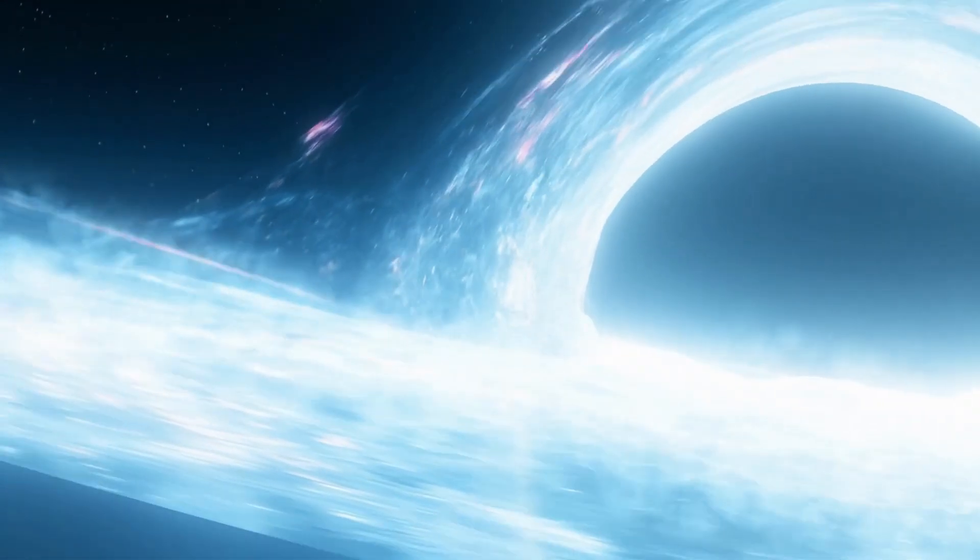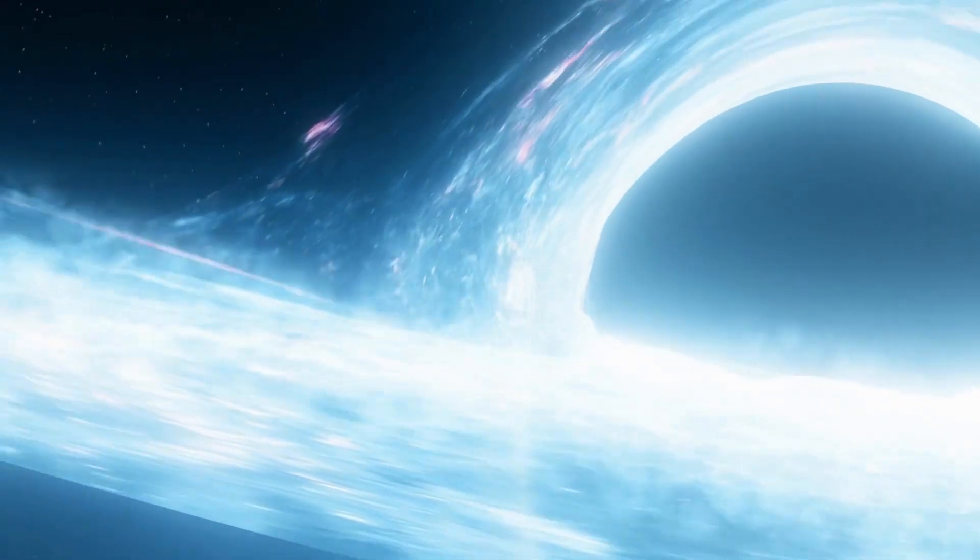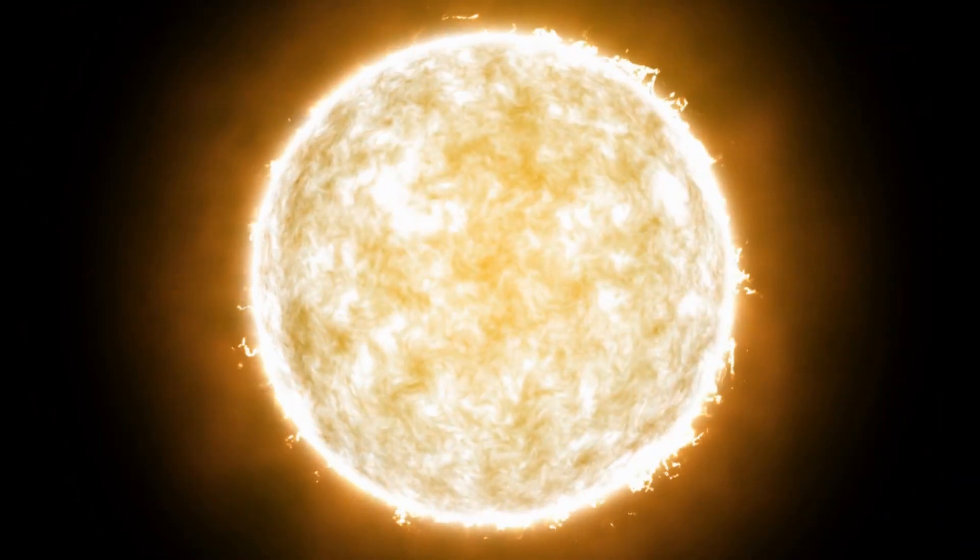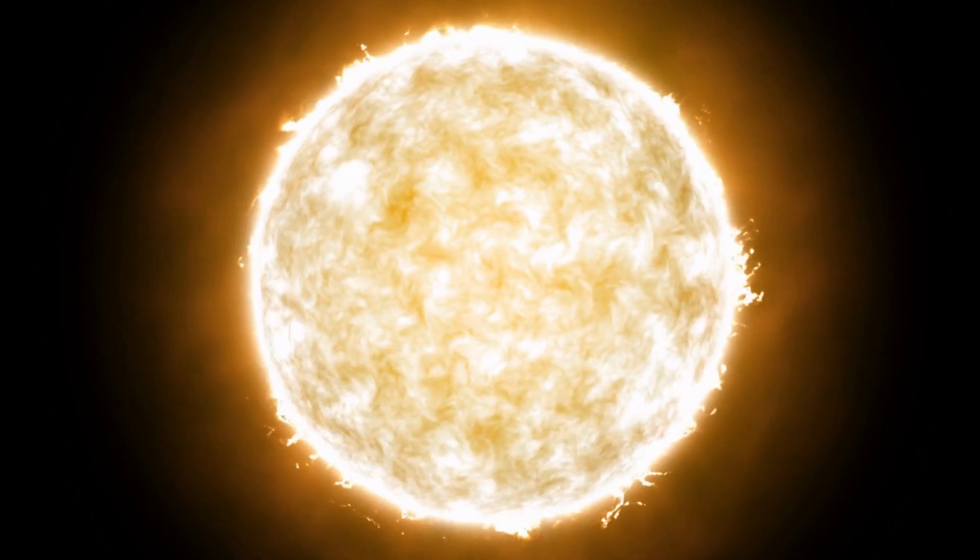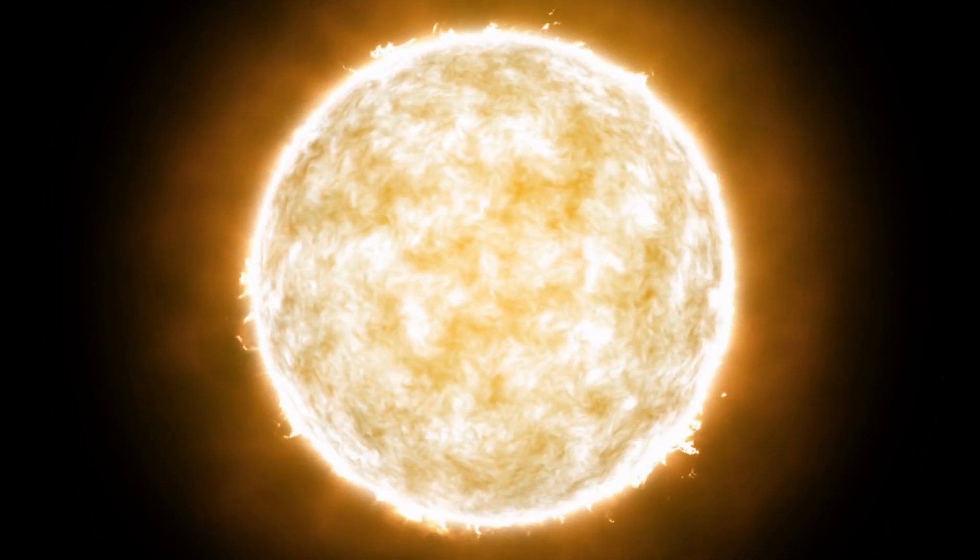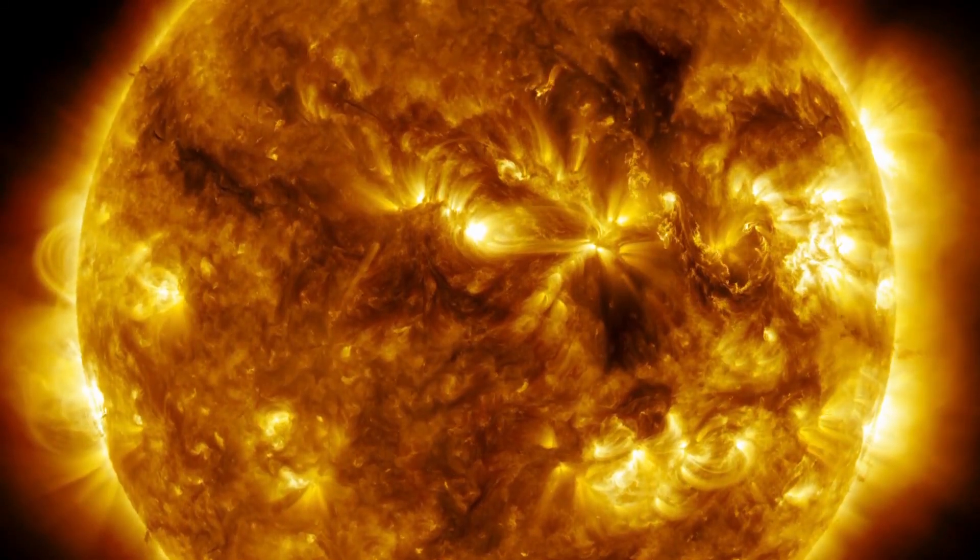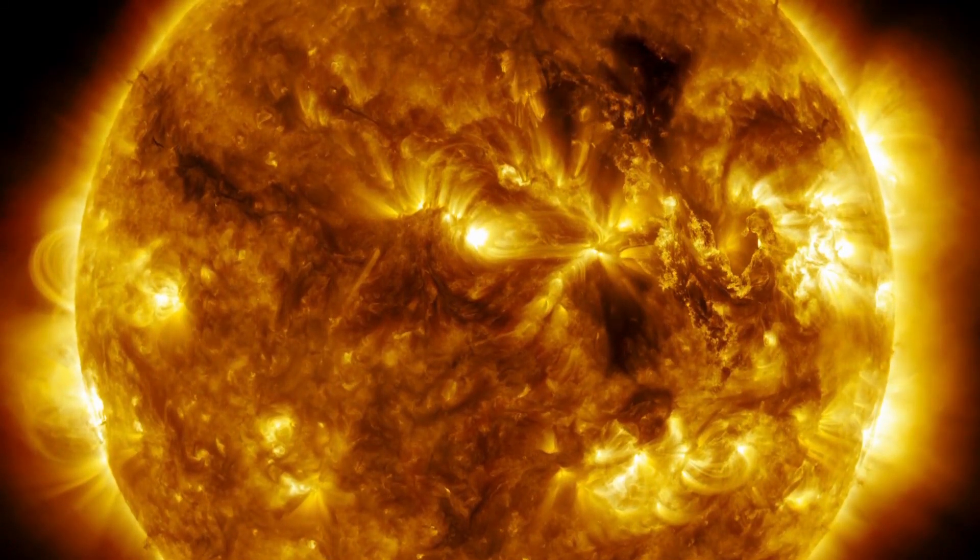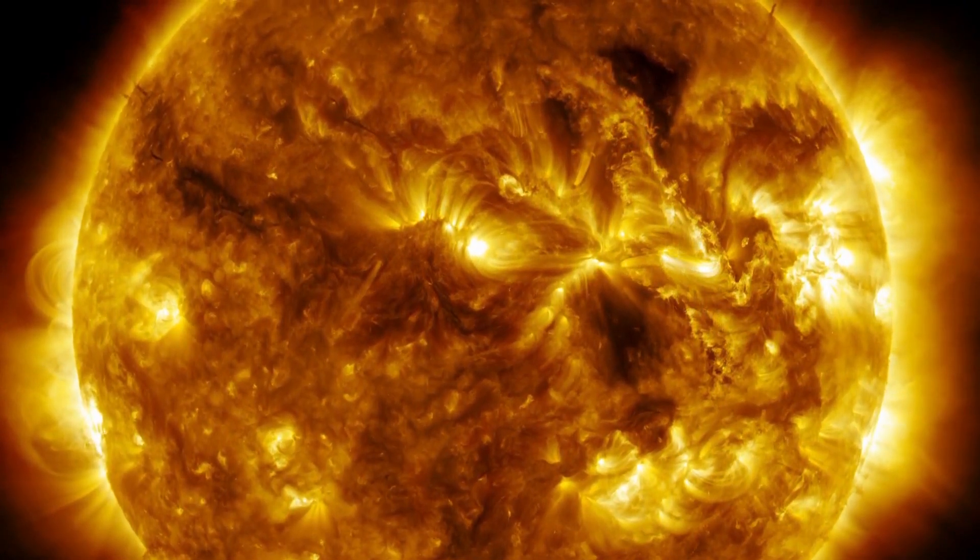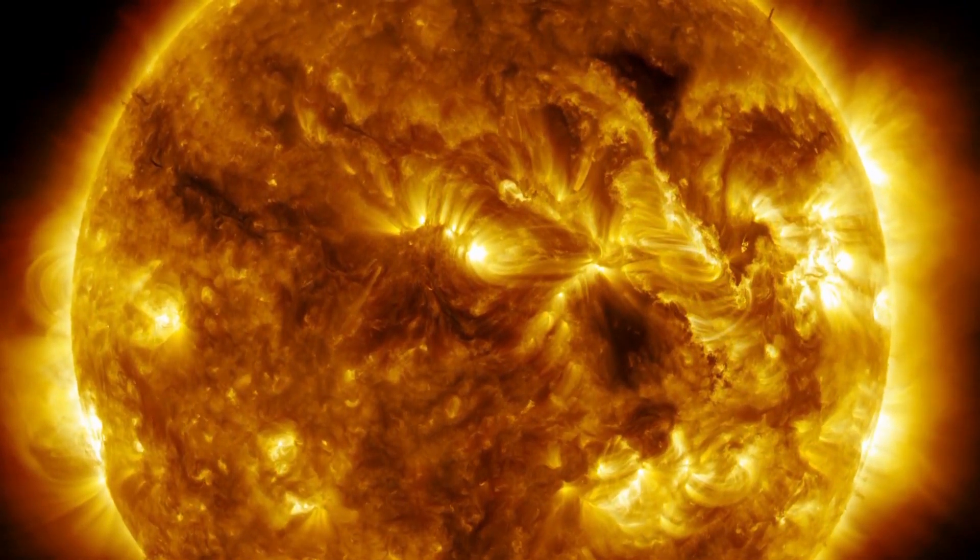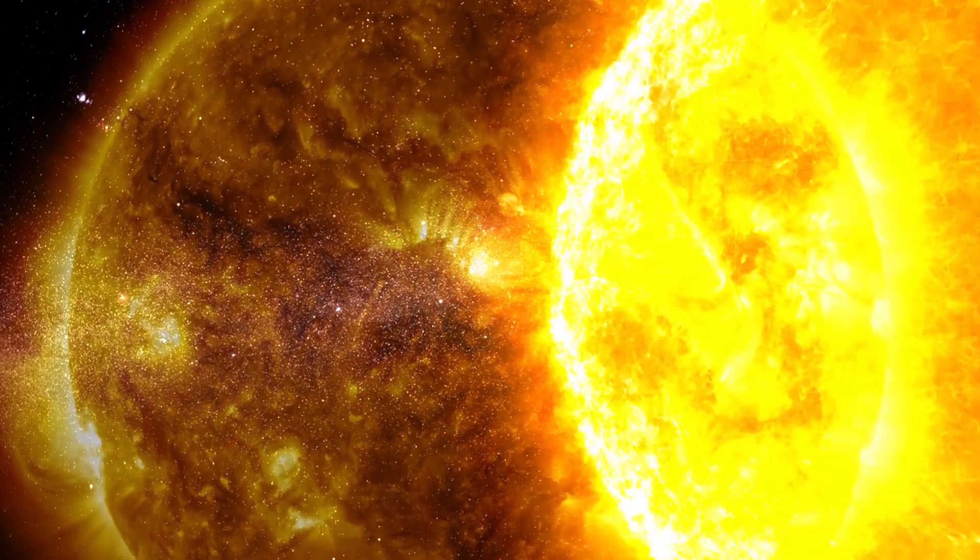To understand how black holes formed and what happens inside them, it is necessary to go back to the life cycle of a massive star. These massive stars are true cosmic powerhouses fueled by the incredible nuclear fusion reactions that take place in their cores. The sun's energy source comes from the fusion of hydrogen into helium. During this process, two hydrogen atoms combine in a collision and form a helium atom. As long as the star has enough hydrogen to carry out the fusion, it can maintain its brightness.